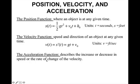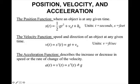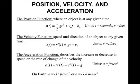Now we have our acceleration function. This describes the increase or decrease in speed — the rate of change of the velocity. The acceleration function is the second derivative of the position function, or the derivative of the velocity function. Taking the derivative of the velocity function gives just the gravity constant. Units are feet per second squared. On Earth, our acceleration gravity constant is negative 32 feet per second squared, or negative 9.8 meters per second squared if you're in science. If you're not on Earth, they'll tell you what it is.